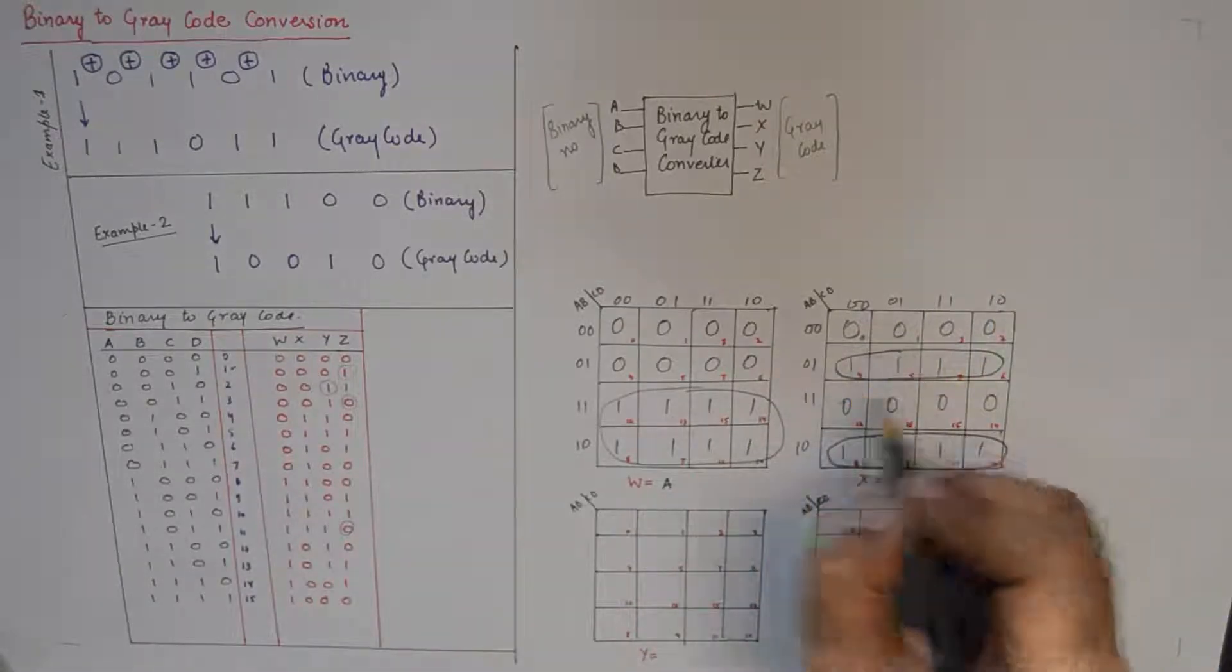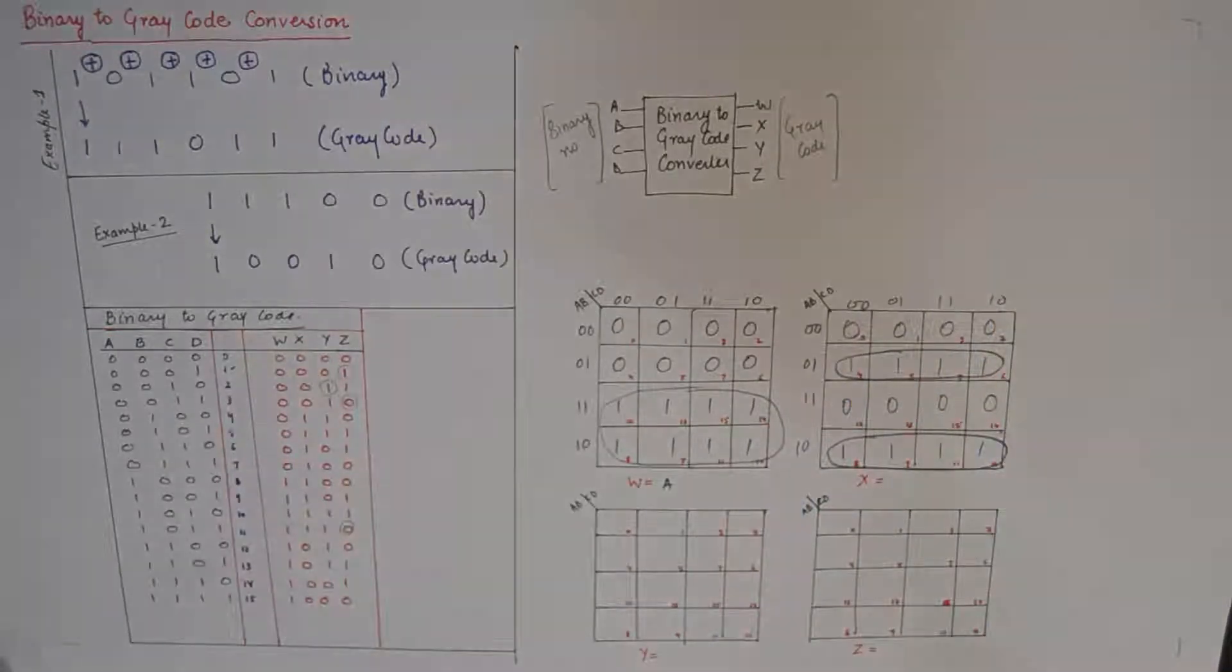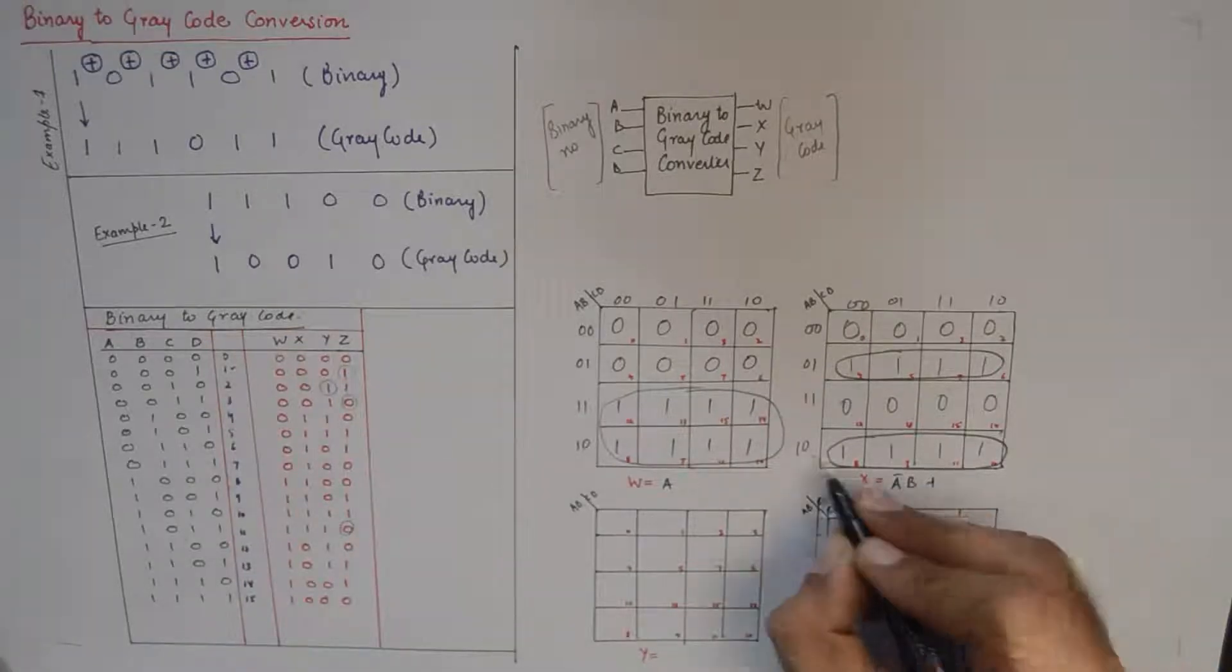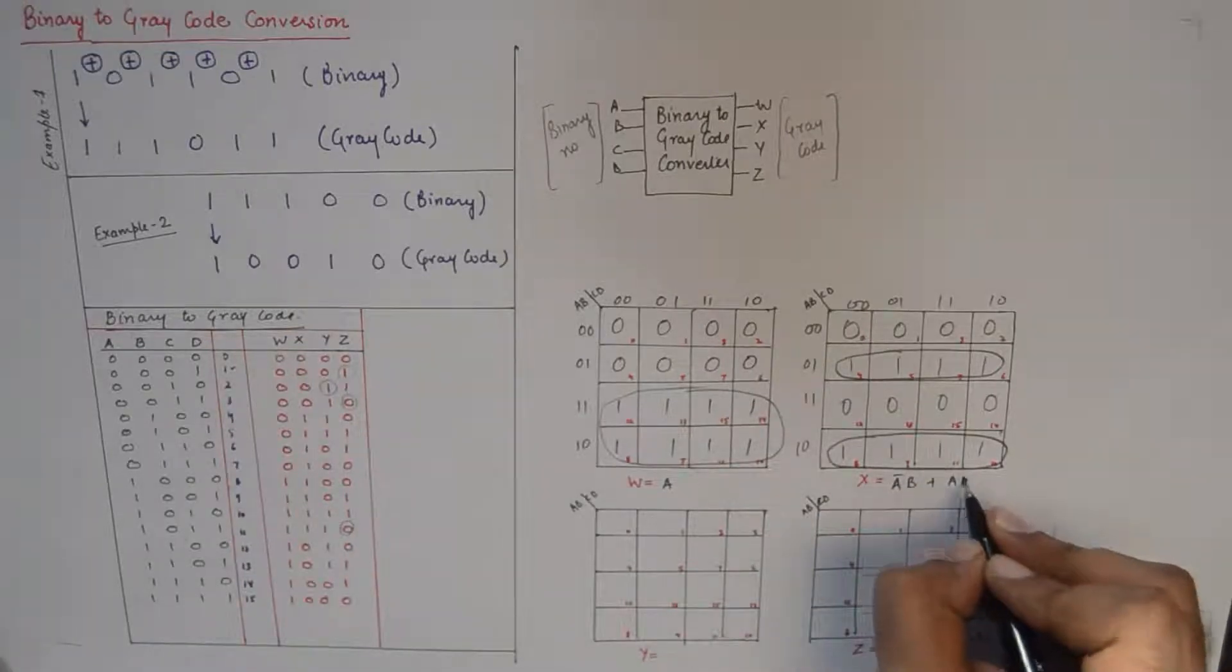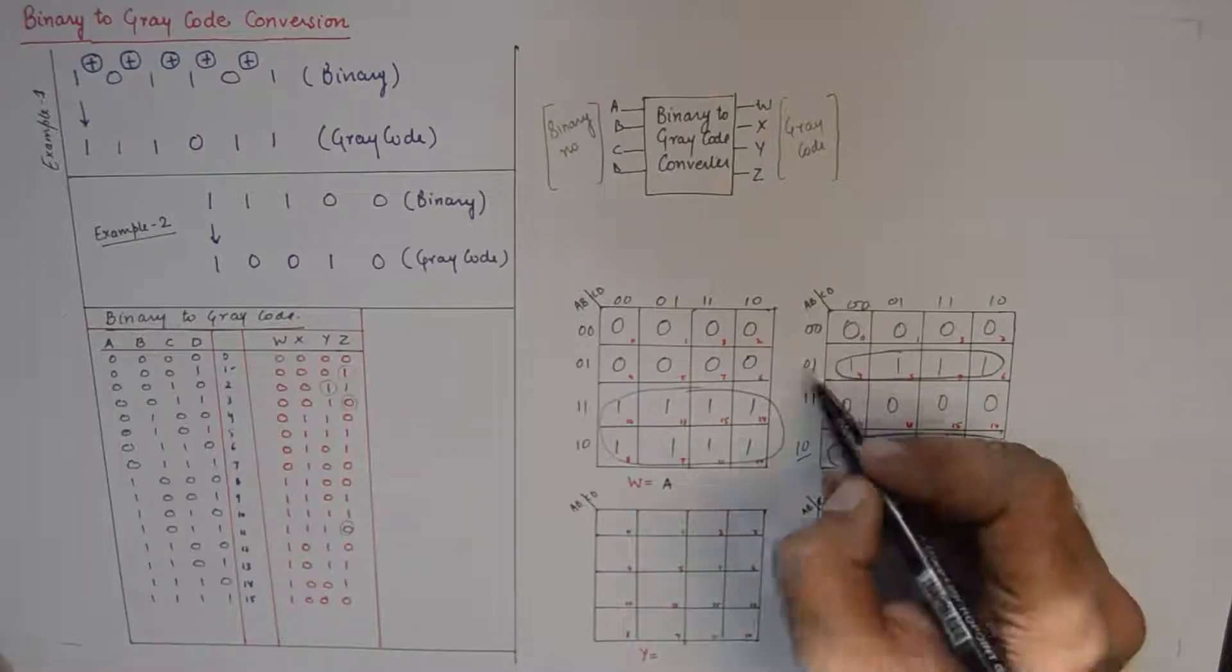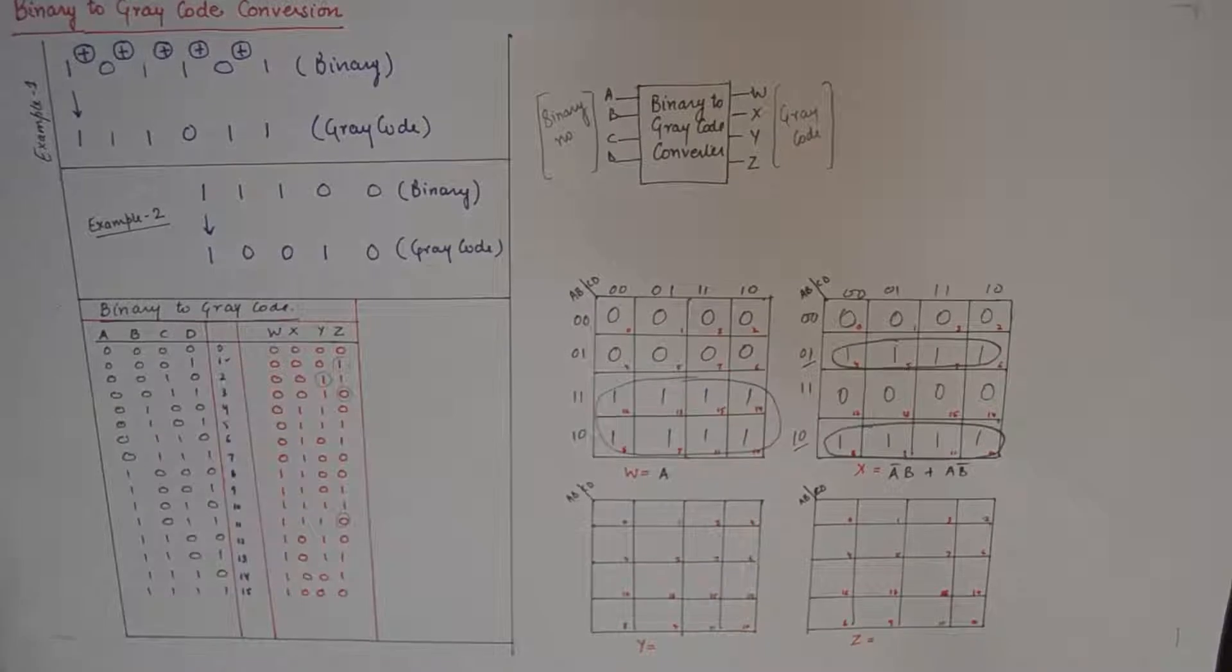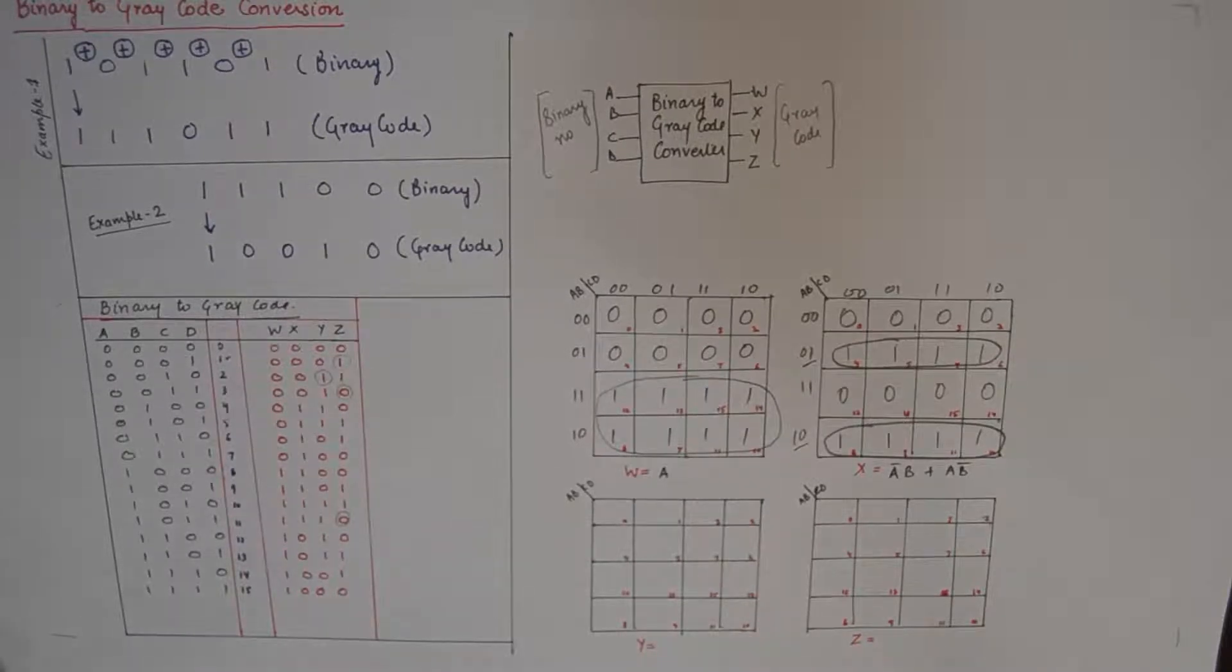And I'll make two quads here, and if I reduce these two quads I'll get a-bar b plus a b-bar. So this is the reduction, and for y...